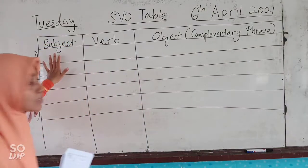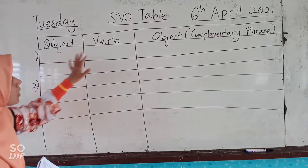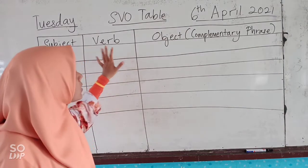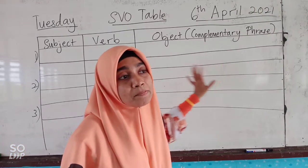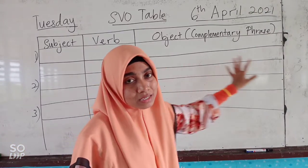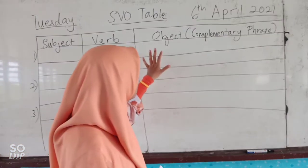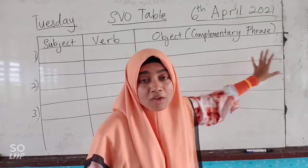Kita akan mula ayat dengan subjek. And then next, verb. And then we are going to complete the sentence with the complementary phrase — ataupun kita panggil secara ringkas, object.